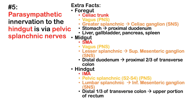Fact 5: Parasympathetic innervation to the hindgut is via the pelvic splanchnic nerves. Reviewing embryology — the GI system is divided into foregut, midgut, and hindgut. The celiac trunk supplies the foregut, the superior mesenteric artery the midgut, and the inferior mesenteric artery the hindgut.